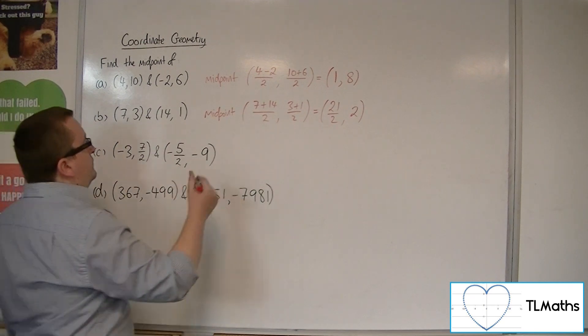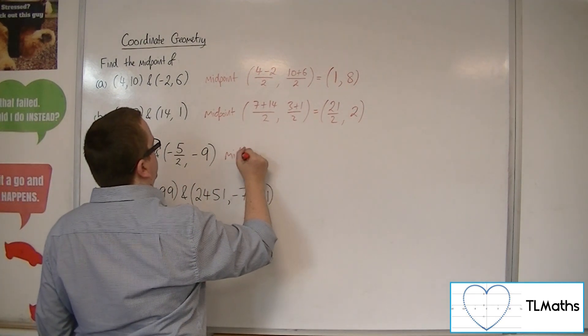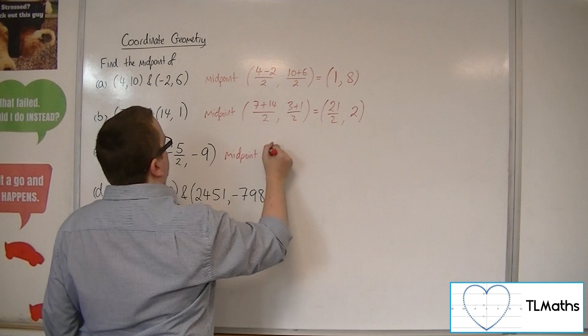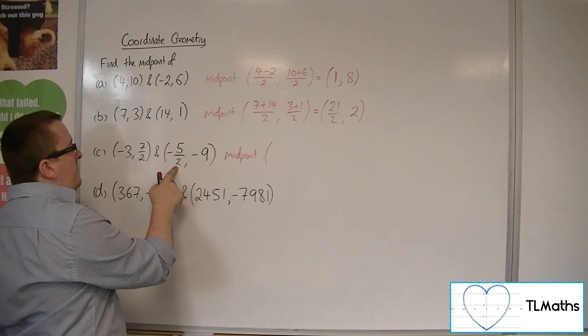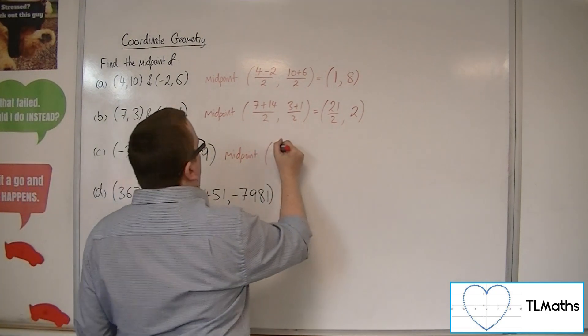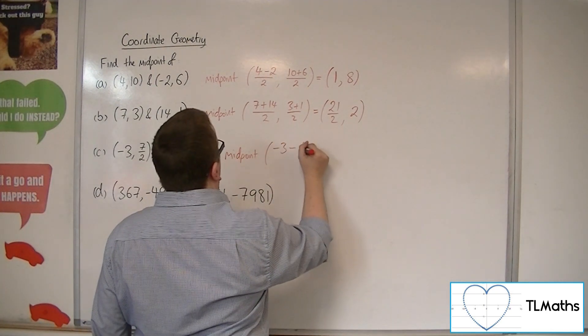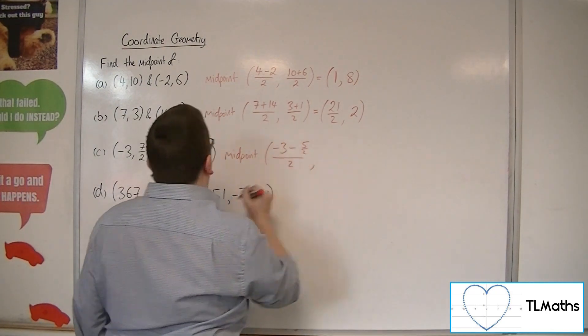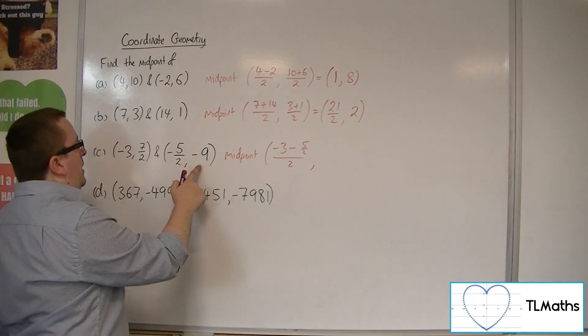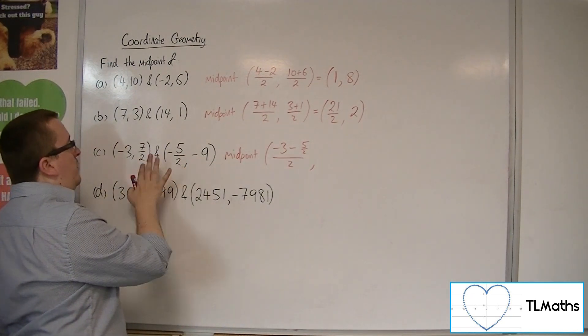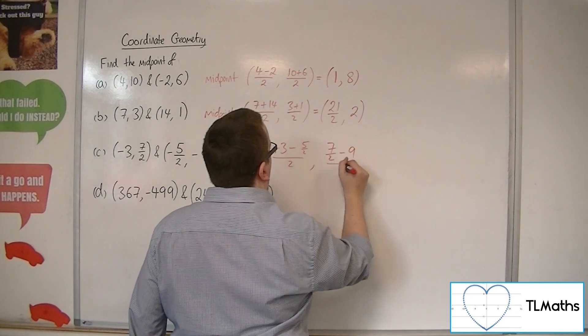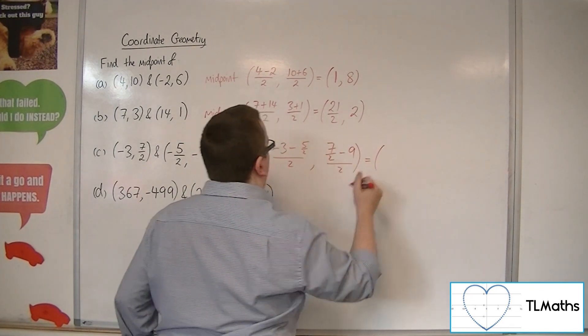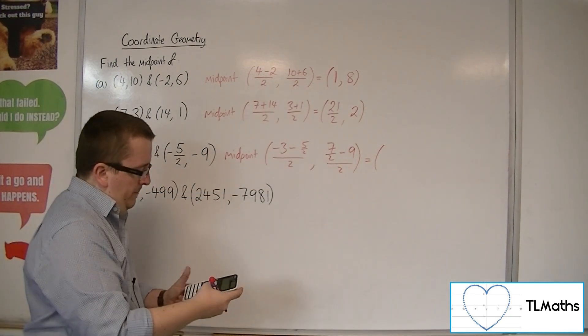Then for C, we've got minus 3 plus negative minus 5 halves. So minus 3 take away 5 halves, over 2. And 7 halves plus minus 9, so 7 halves take away 9, over 2. Let's go for the calculator on this one.